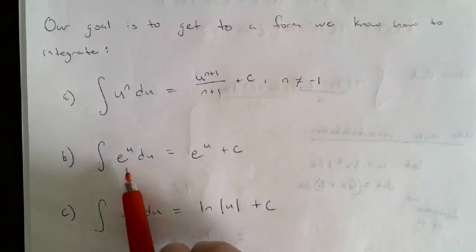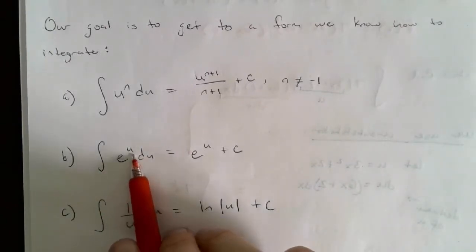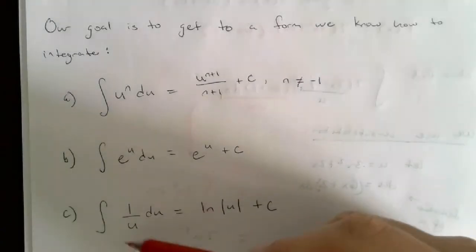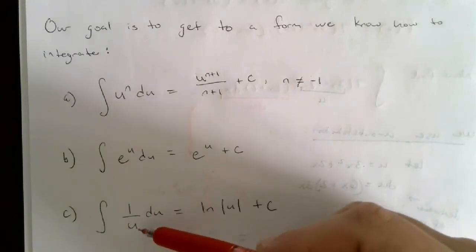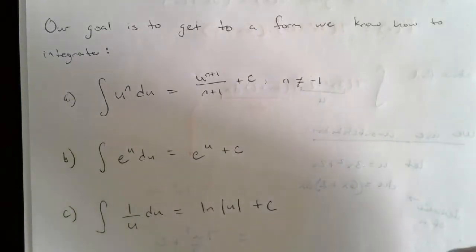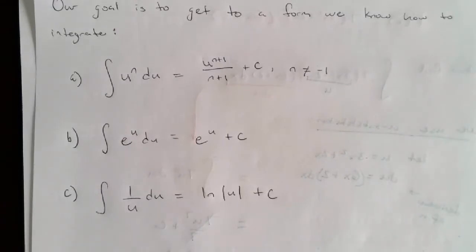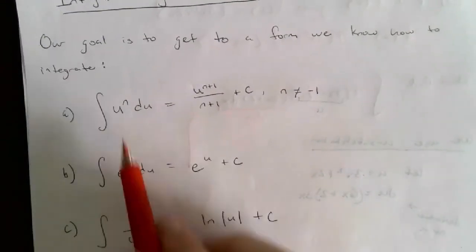If you see an e in the integrand, let u equal the exponent on e, so you get e^u. If you see a function of the first power in the denominator, let u equal the denominator to get 1/u. Those are the ways to think about picking u so it fits one of the three forms.